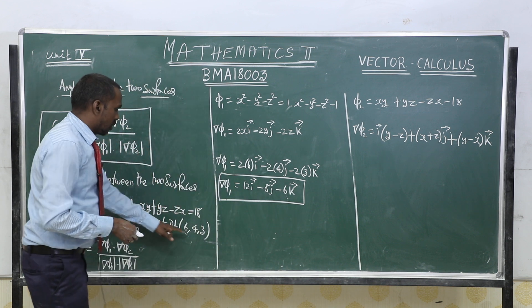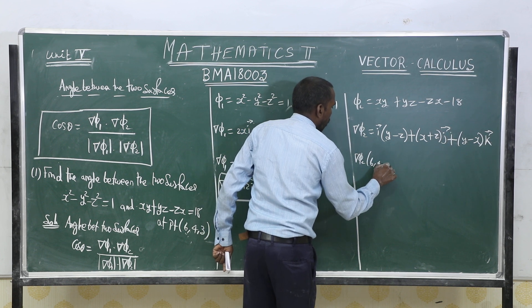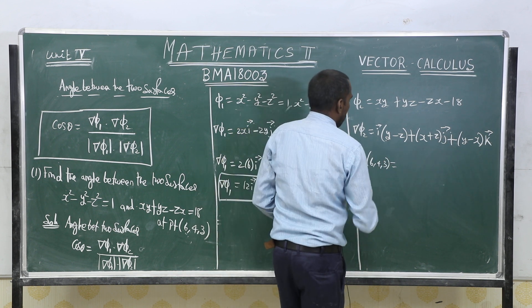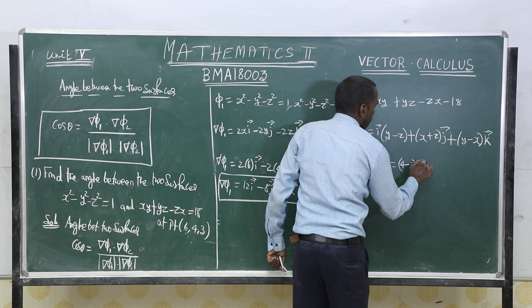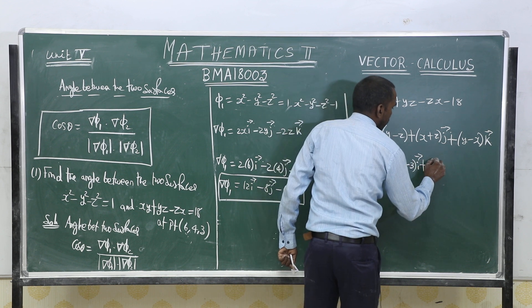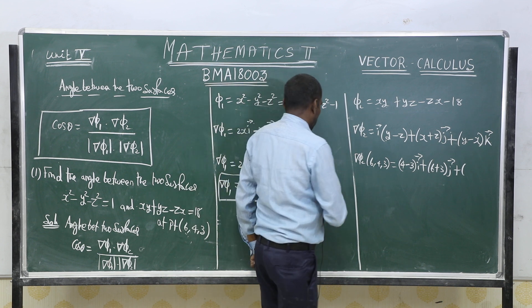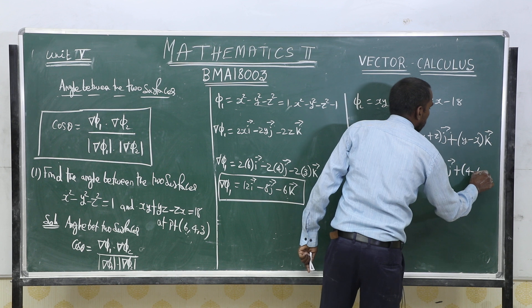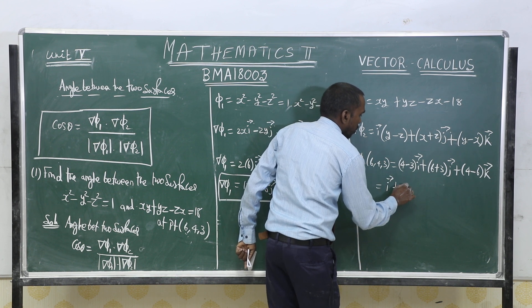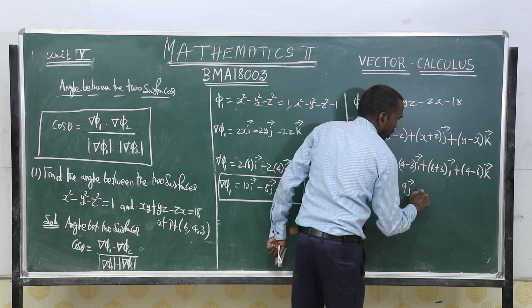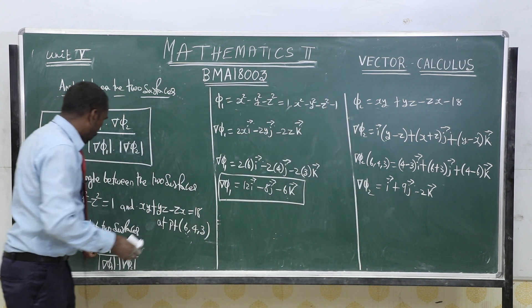Substitute the point (6, 4, 3) into ∇φ₂: (4-3)i + (6+3)j + (4-6)k = 1i + 9j - 2k. So ∇φ₂ at (6,4,3) = i + 9j - 2k. We now have both ∇φ₁ and ∇φ₂.